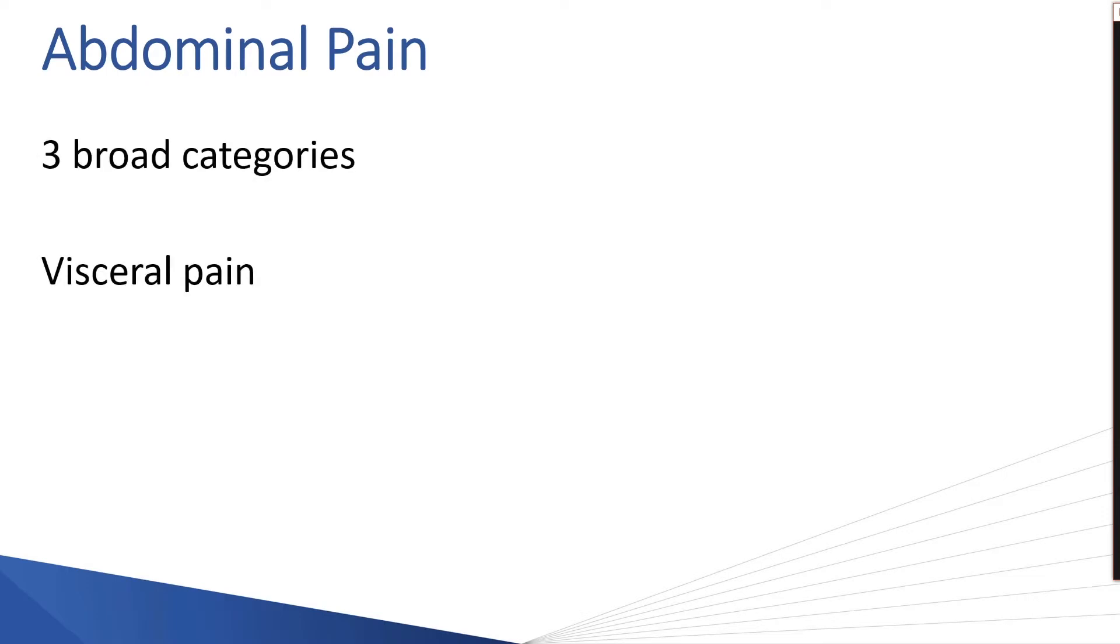The first category would be visceral pain, the second would be parietal pain, and the third and final category would be referred pain. Knowing these pain categories and how they affect the patient, what type of organs can be affected, and how pain progresses through these stages is important in your history-taking process.